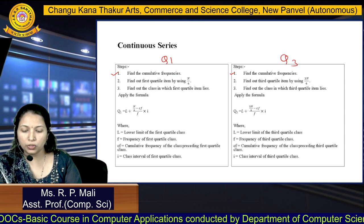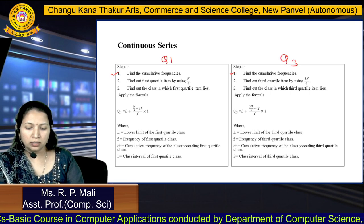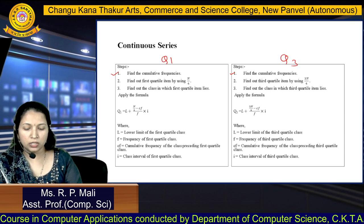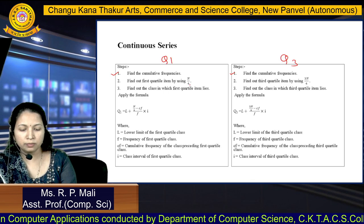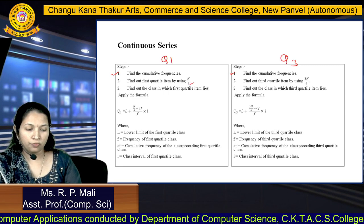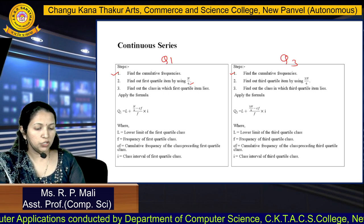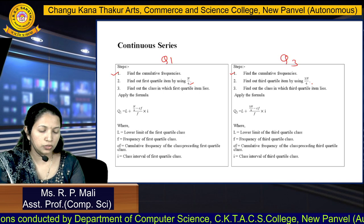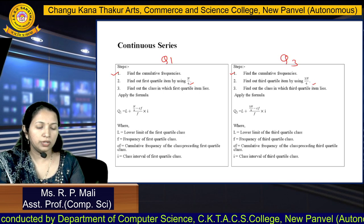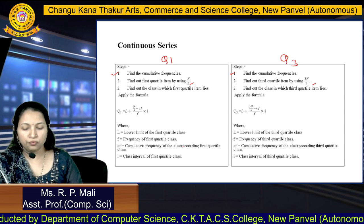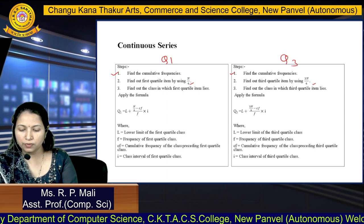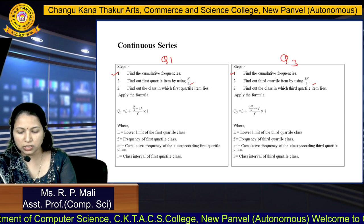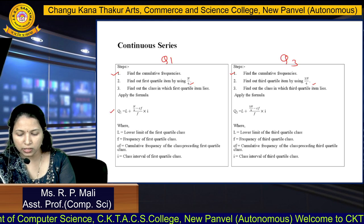For the next step, we are going to find the first quartile item. How to find the first quartile item? N by 4. Next, we are going to find the third quartile item using 3N by 4. After that, we are going to apply the formula. This is the formula for Q1.